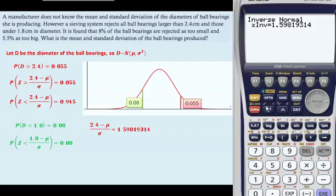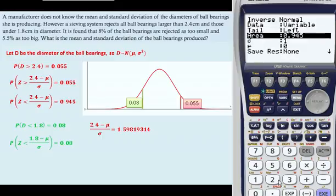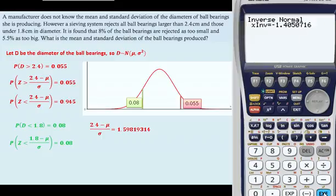And then we're going to do the same thing. We can do a left one. We know it's 0.08 in this case, our area. And this time we get minus 1.4050716.